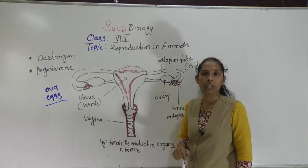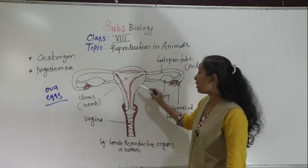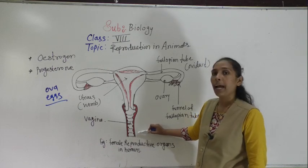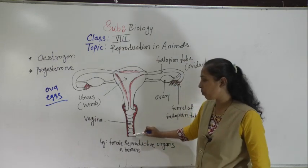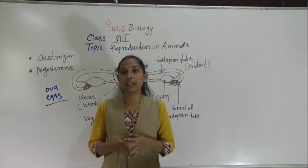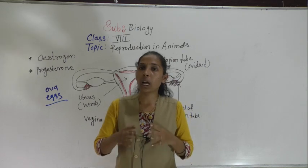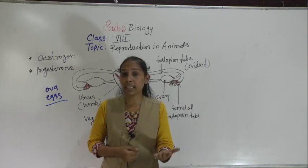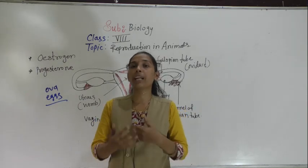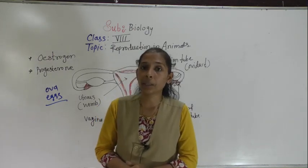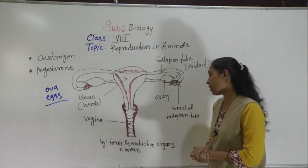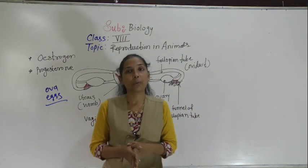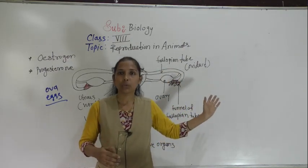The last female reproductive organ is the vagina. The uterus gets elongated and opens outside the body through the vagina, which is a muscular tube. An important point is that in females, the vaginal opening and the urinary opening are both different, unlike in males. Females also have accessory glands like mammary glands, which help to nourish and feed the small babies.